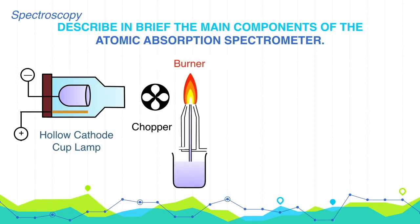3. Burner. The flame is produced by burning the fuel with the oxidizer, and the sample is introduced into the flame. Burners used are of two types: total consumption burners and pre-mix burners.